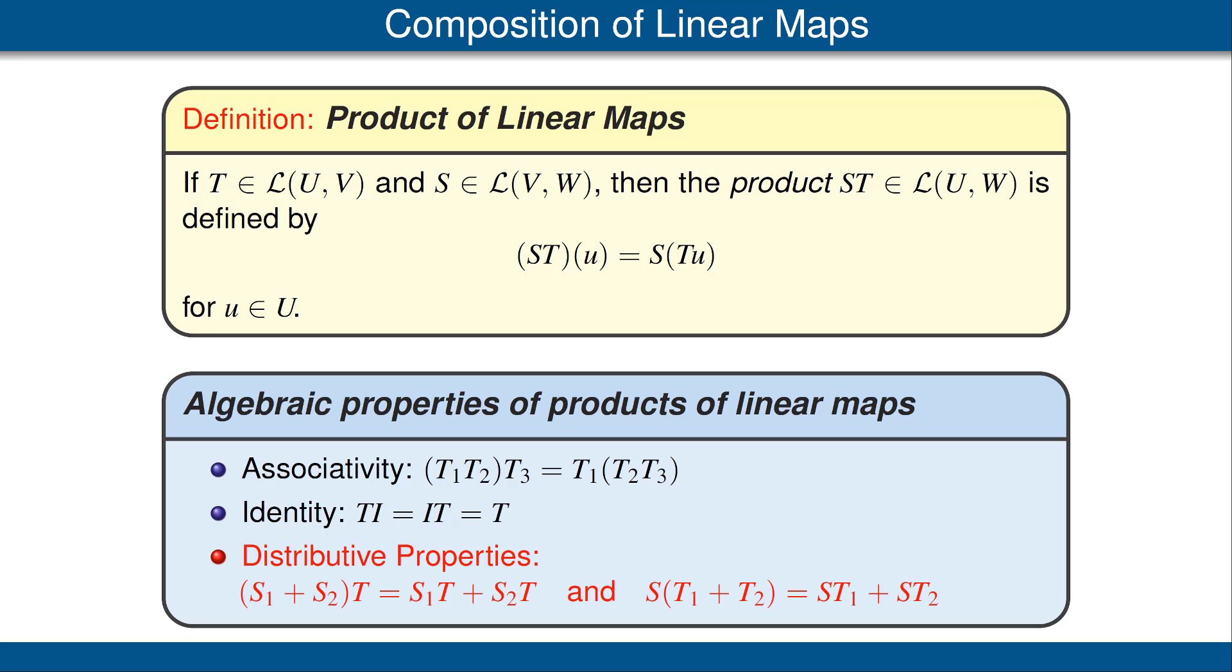The third key property of products of linear maps are the distributive properties, which you see here. Again, for this to make sense, the domains and ranges have to be appropriate. Notice that there are two distributive properties, rather than one. The reason for two is that the product of linear maps, unlike the sum of linear maps, is not commutative. In other words, S times T does not necessarily equal T times S.